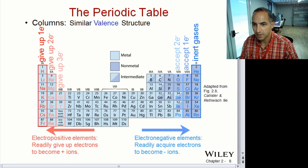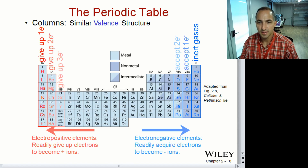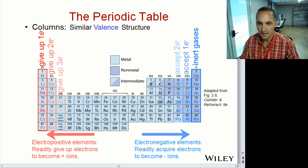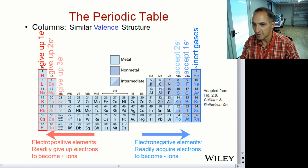The periodic table is divided into columns with similar valence for every element in that column. The 1A group on the far left gives up one electron, the 2A gives up two electrons, and 3B gives up three electrons. On the right you have your inert gases — just happy the way they are — the 7A's which accept one electron, and the 6A which accepts two.